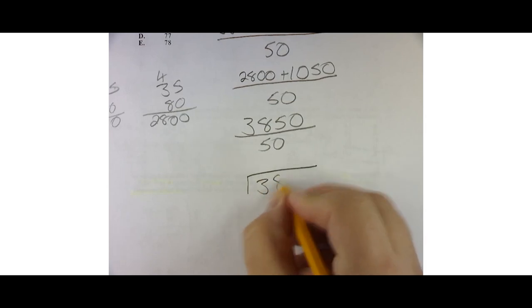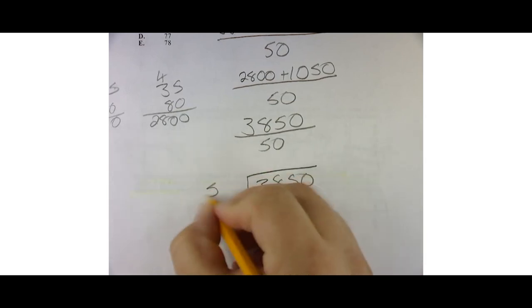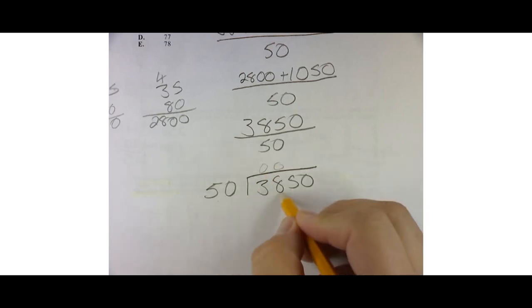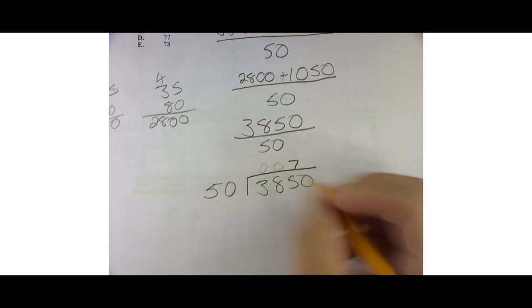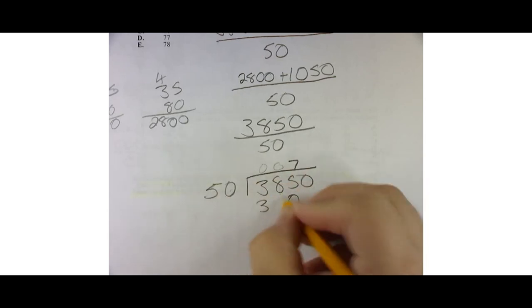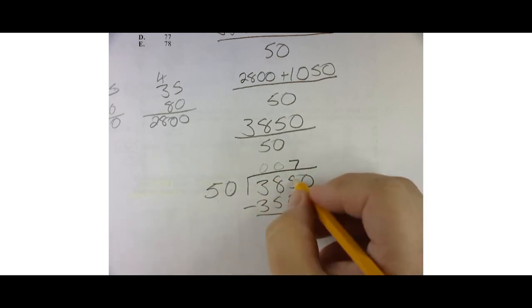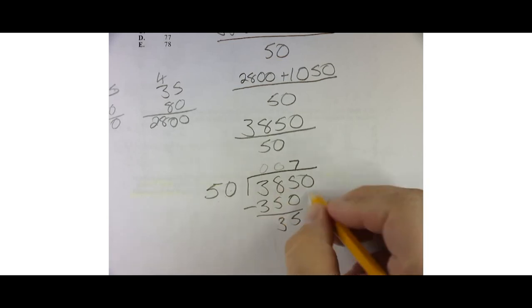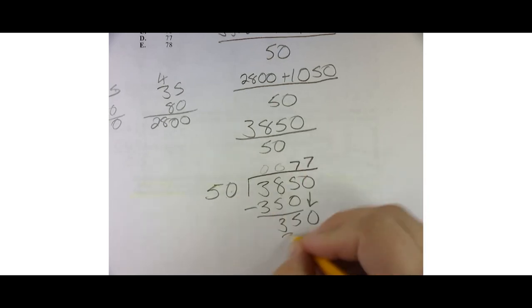3850 divided by 50 is not that hard. 50 goes into three zero times. 50 goes into 38 zero times. 50 goes into 385, I would guess seven times. 7 times zero is zero. 7 times 5 is 35. Subtract and find the difference. 5 and 3. Hey, if I drop my zero, guess what? 50 goes into 350 exactly seven times.